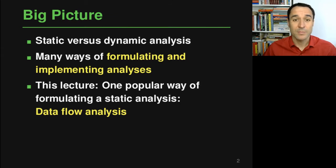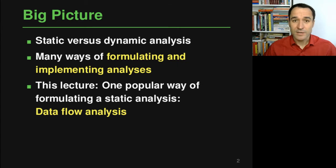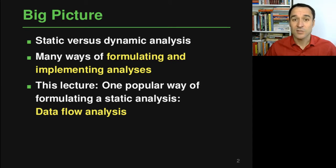Let's get started by having a look at the big picture. There are two kinds of analysis: static analysis, where the source code is analyzed without executing the code, and dynamic analysis, where you execute the code and while the program is running, some analysis extracts additional information. Data flow analysis, the focus of this lecture, is a static analysis — the analysis reasons about the source code and tries to reason about the different behaviors the code may have if executed. Data flow analysis is probably the most popular formulation because it's a very powerful way of expressing how to reason about program behavior.